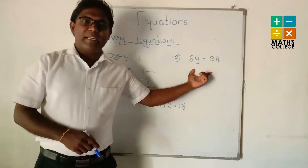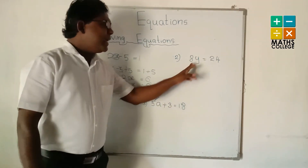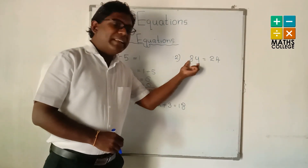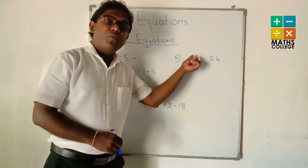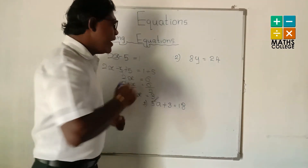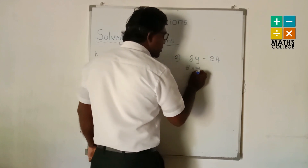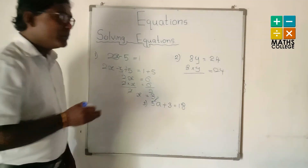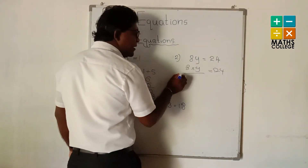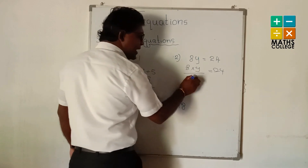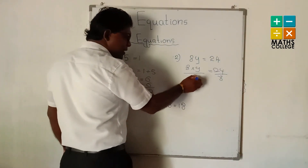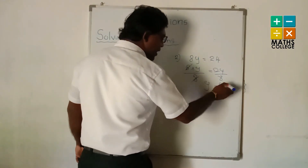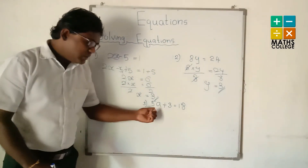Second example: 8y = 24. We have to find y. What is the related operation? 8y means 8 multiply y. The opposite operation of multiplication is division, so we divide by 8 on both sides. 8 cancels 8. y = 3.